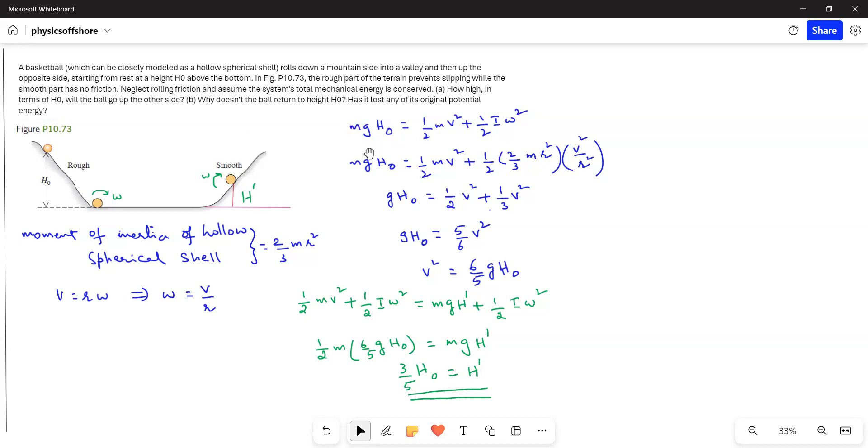Here, initial energy is the gravitational potential energy. I am representing H as H0. So MGH0 equals half MV² plus half I omega squared. I equals 2/3 MR² for a hollow spherical shell. So half times 2/3 MR² times V² over R². On simplifying, we get V² equals 6/5 GH0.